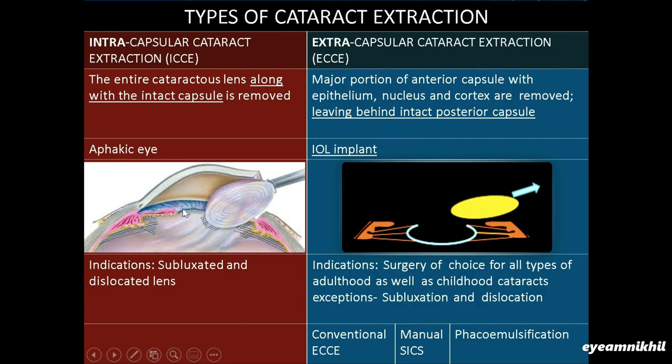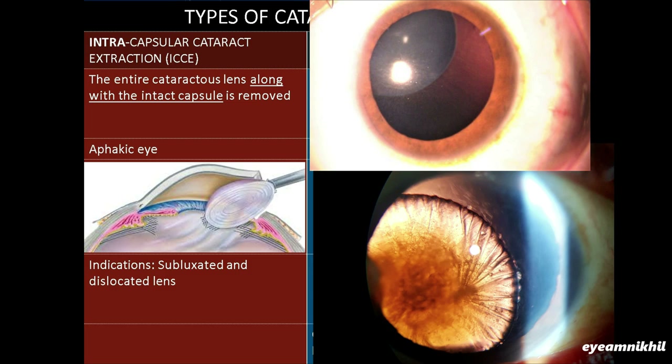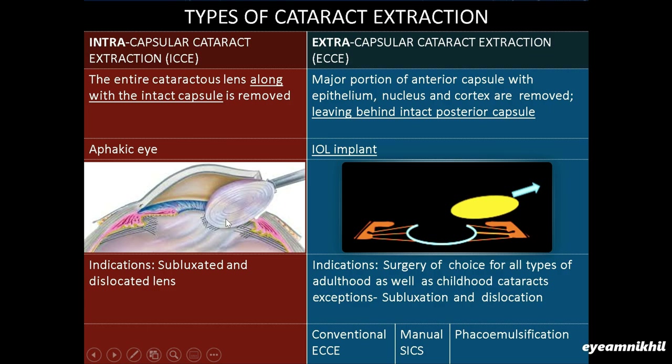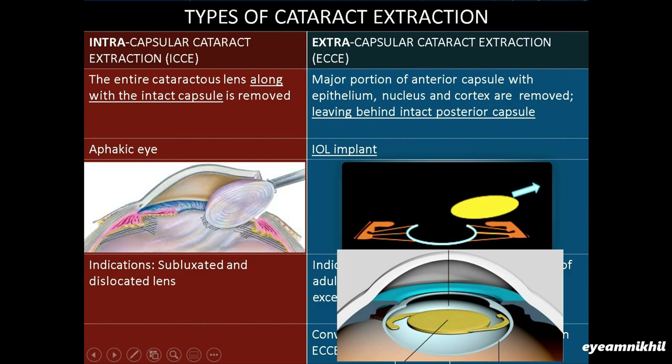With no capsular bag left, a posterior chamber intraocular lens cannot be placed, thus leaving the eye aphakic unless an anterior chamber intraocular lens or secondary IOL is put. ICCE has very limited indications — subluxated or dislocated lens — because in these patients zonules are already absent, weak, or broken, and attempting SICS or phaco would stress remaining zonules causing the entire lens to fall into the vitreous. In ECCE, the major portion of anterior capsule, nucleus, and cortex is removed leaving behind an intact posterior capsule for a posterior chamber IOL, making ECCE the surgery of choice for all cataracts except subluxated and dislocated ones.